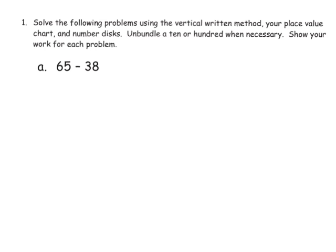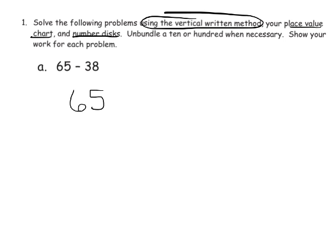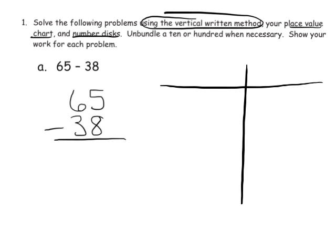The directions say to solve using the vertical written method, but also to use the place value chart and number disks. This is part of that transition. So what we're going to do is first write the problem — 65 minus 38 — making sure that we line up the ones column and the tens column. And I'll show the place value chart here with ones and tens, but I'm just not going to fill it in right now.